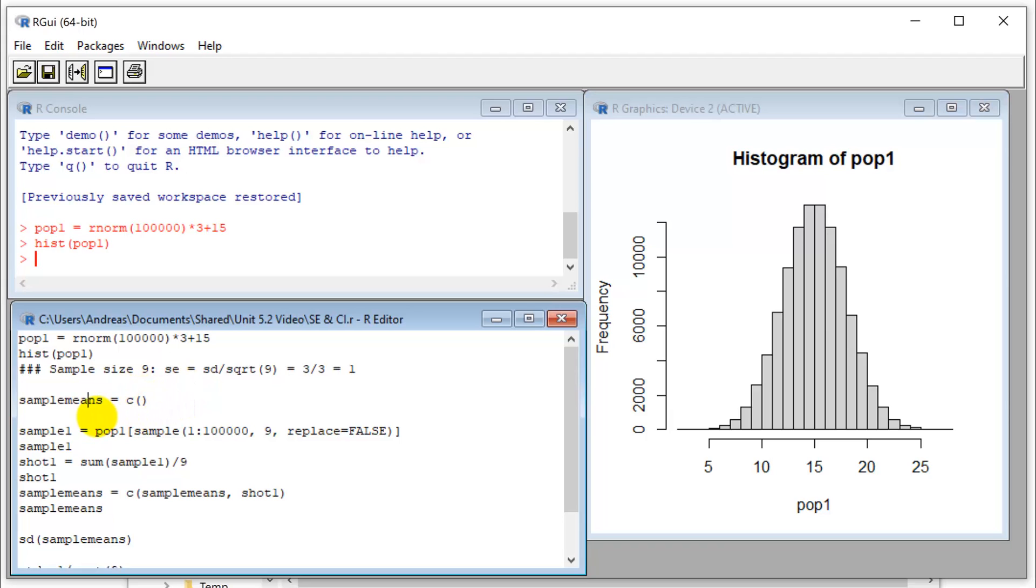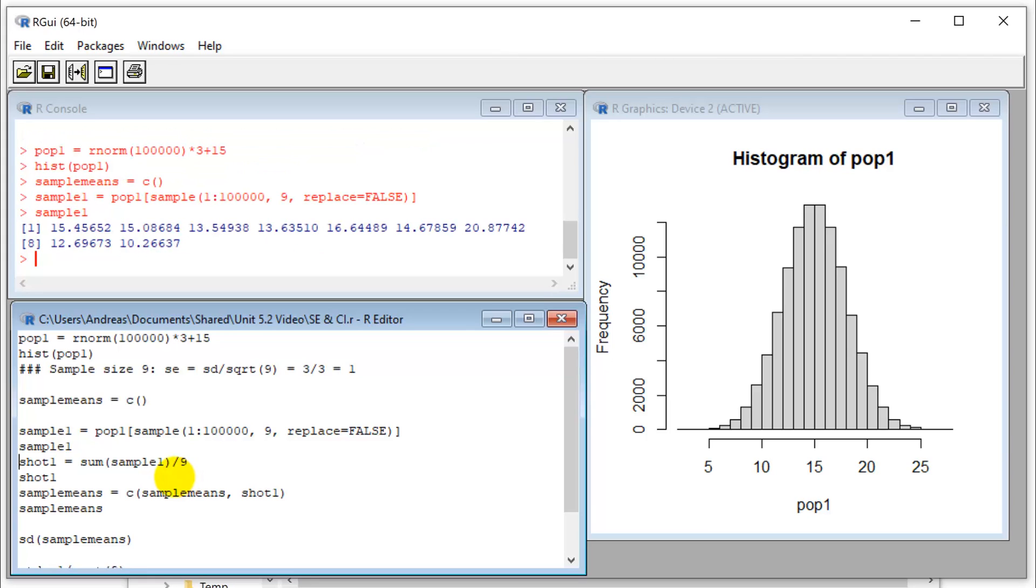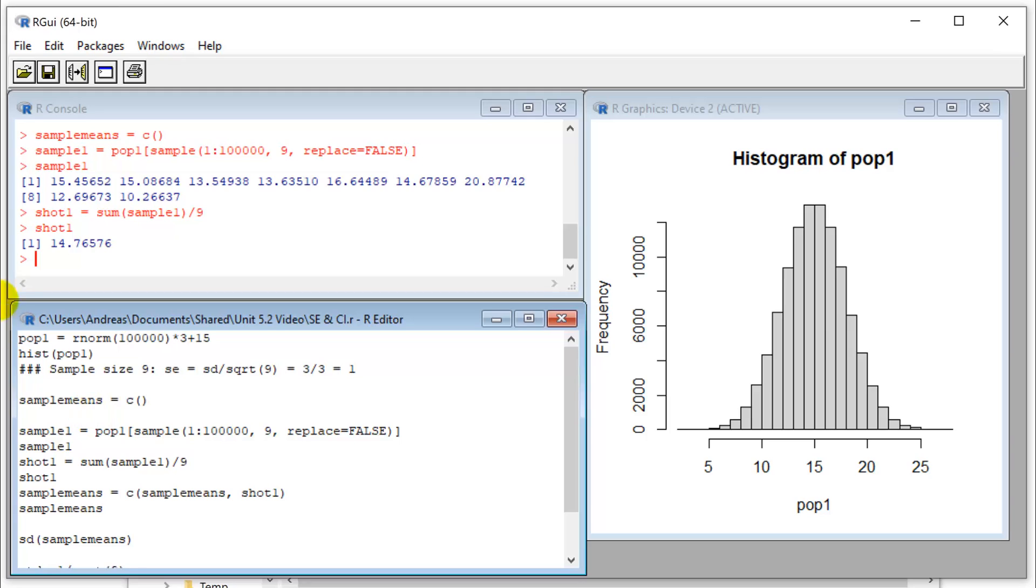So I do want to keep track of my sample means. So I start here with an empty vector. And let's start sampling with sample size equals 9. So there's my sample from that population. And let's calculate the first mean, 14.7, a little bit below, but that's expected.